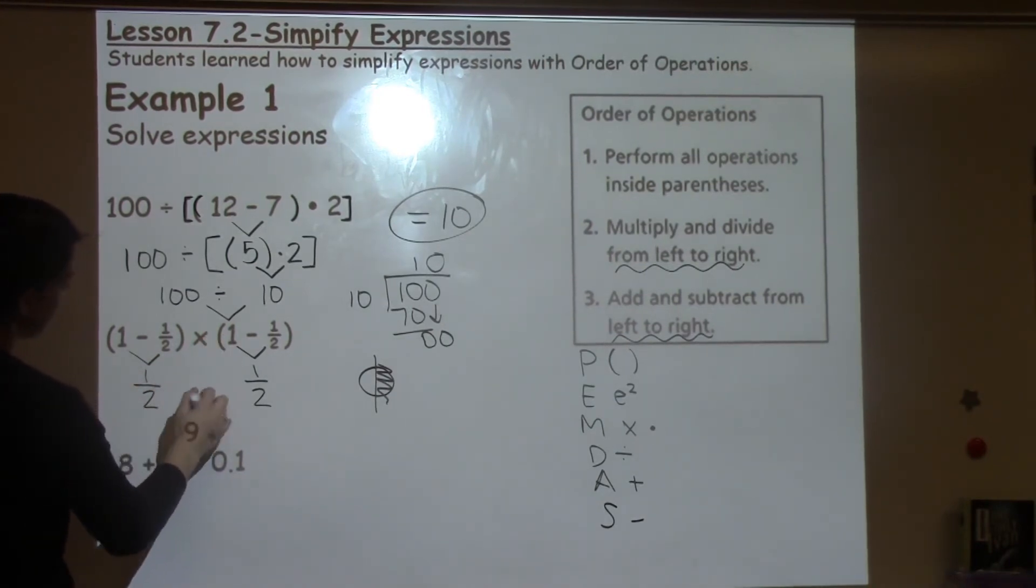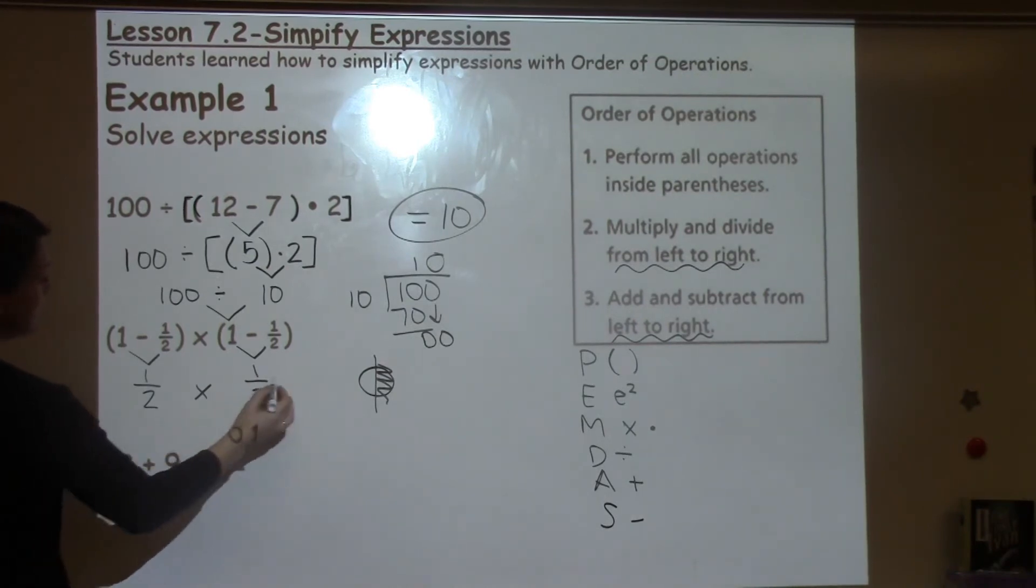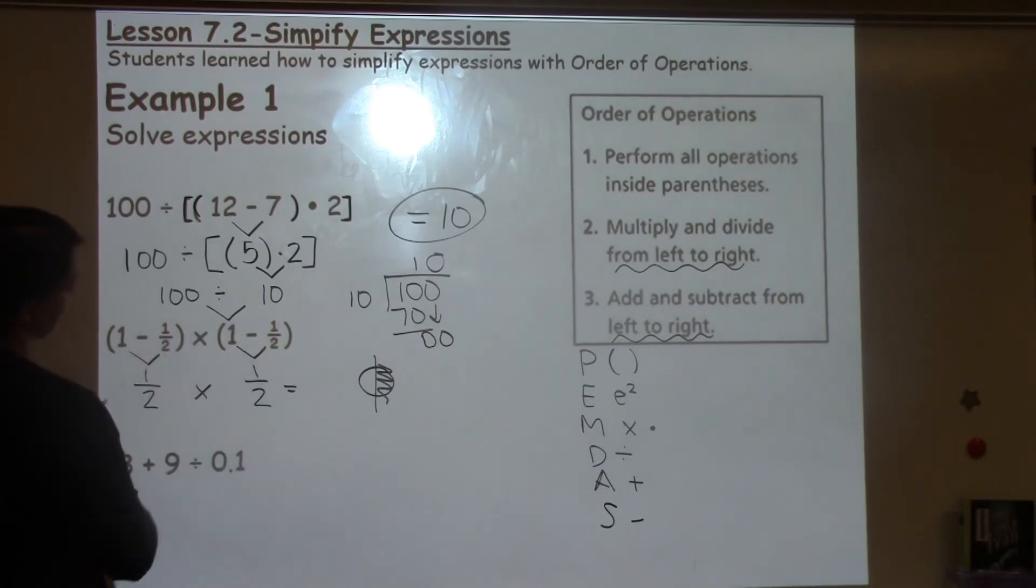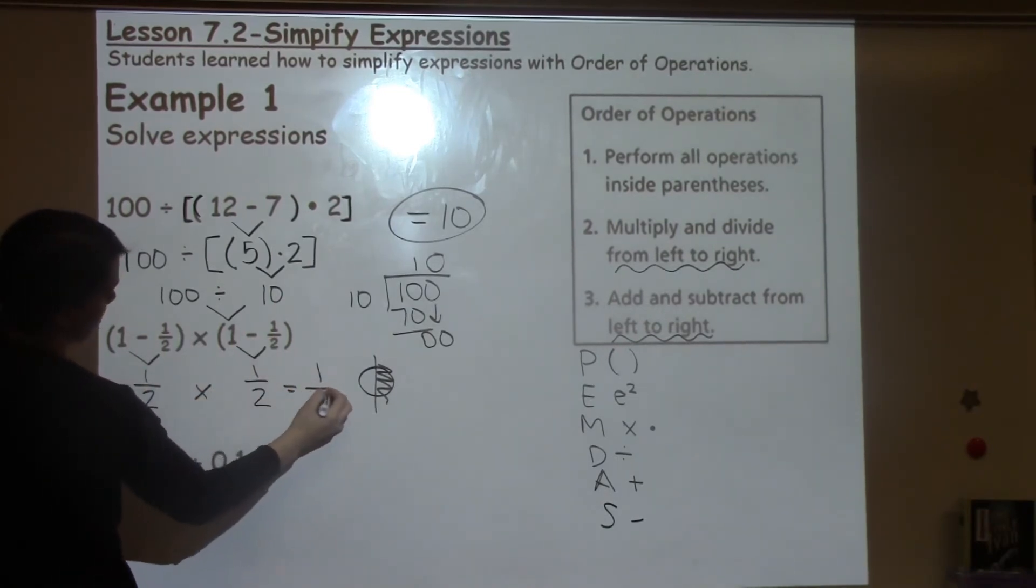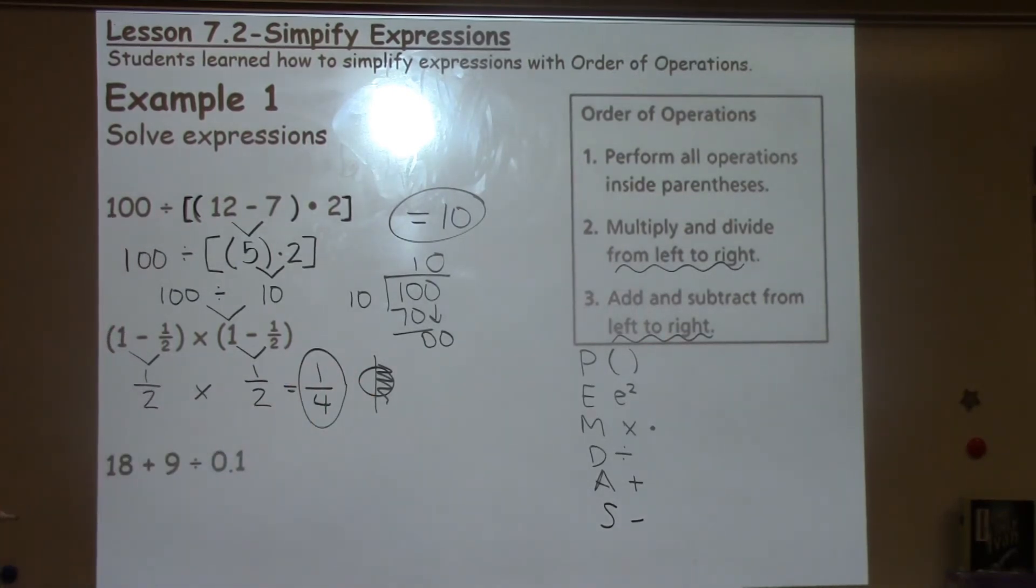The only thing that I haven't done in this problem is multiply. Use that multiplication symbol. So I don't have anything left. I've taken care of what's in this parentheses, taking care of what's in that parentheses. Now I can just do top times top and bottom times bottom for a final answer of 1 fourth.